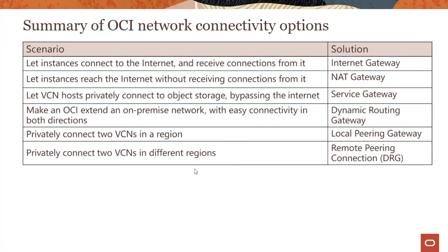We've now looked at the different gateways OCI supports. The internet gateway is bidirectional going to the internet. The NAT gateway is unidirectional from private subnets, doing network address translation to the internet. The service gateway goes from a private subnet to OCI public services like object storage. The dynamic routing gateway takes private traffic to your on-premises environment. The two additional connectivity options we just saw are: the local peering gateway, which connects two VCNs in the same region, and the remote peering connection (part of DRG), which privately connects two VCNs in different regions so resources can communicate using private IP addresses.